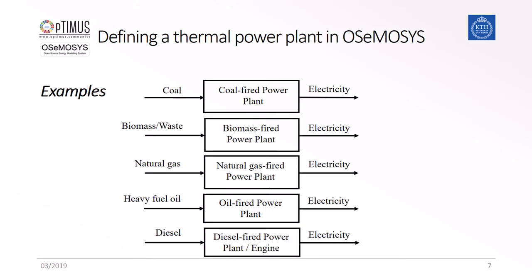Looking more in detail at typical thermal power plants, we can see the same structure as in the overall reference energy system. The structure is that the input fuel corresponds to the fuel or fuels consumed by the power plant, and the output fuel is at least one output fuel — in this case, electricity.